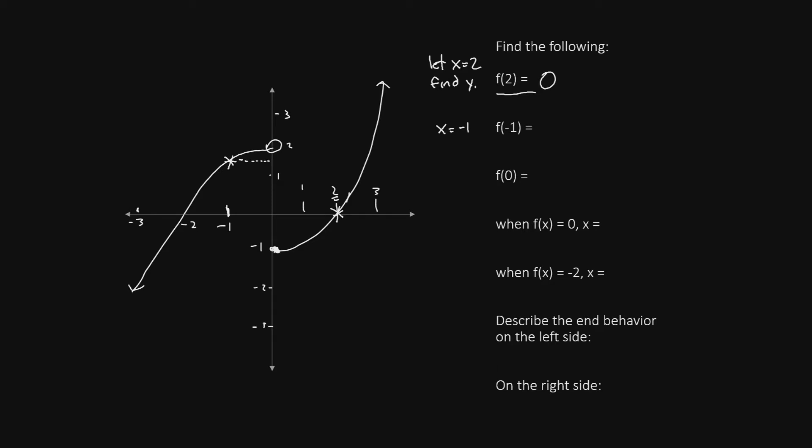We can see that the y value is halfway between 1 and 2, not exactly but just about halfway. So we'll say that the value of f(-1) is 1 and a half, or 1.5.